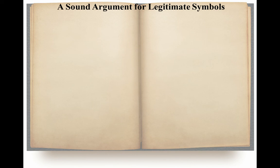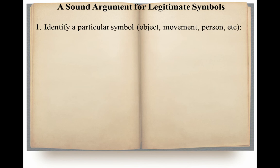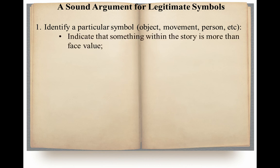Here's a little tool for thinking about how to find symbols within a text — a sound argument for legitimate symbols. The first step is to identify a particular symbol: decide that something within the text is a symbol. That can be an object, movement, a person, a color, some kind of action — really anything. If you see something and you feel like it seems like more than face value — for example, 'I'm reading this story and this bird keeps taking flight' — that's identifying something and trying to figure out its value. It seems like it's something more than just a bird in the story.